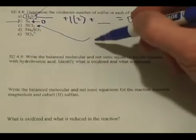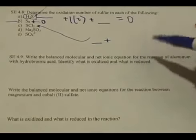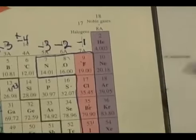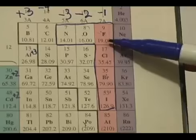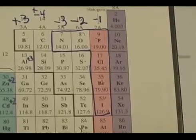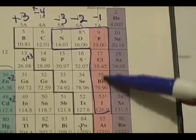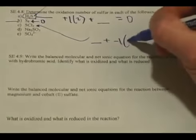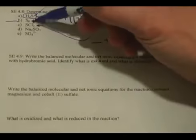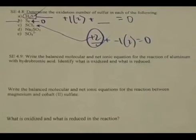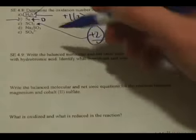In SCl₂: we make an educated guess that chlorine is minus one (almost always), and there are two of them. That has to add up to equal zero, so sulfur must be positive two. In Na₂SO₃: sodium is positive one, there are two of them. Oxygen is minus two and there are three of them. So positive two plus sulfur plus negative six equals zero, meaning sulfur must be positive four.